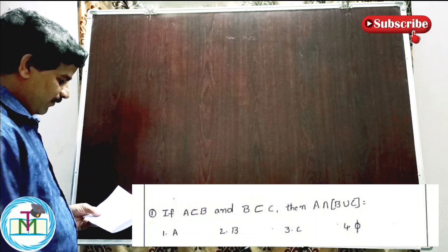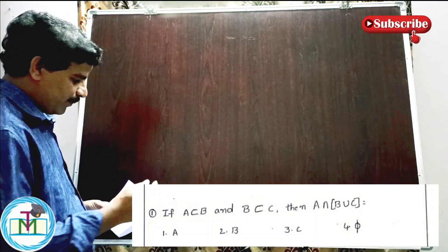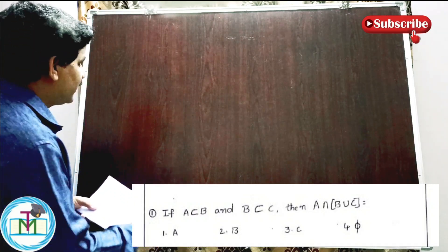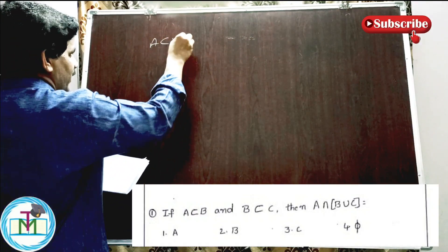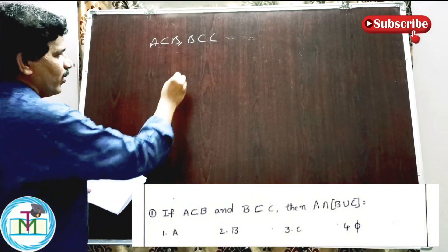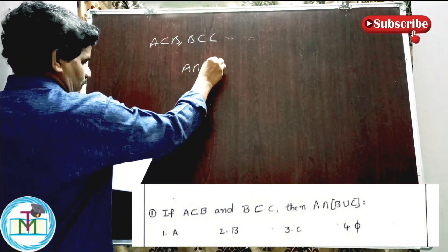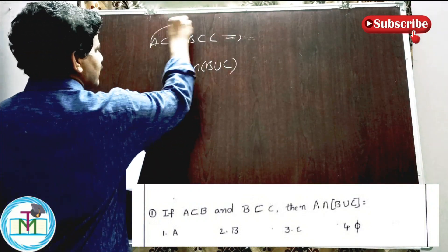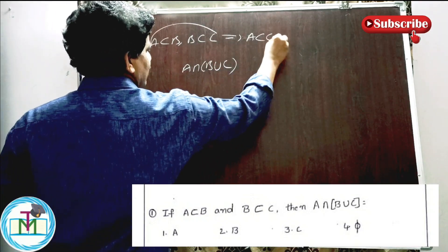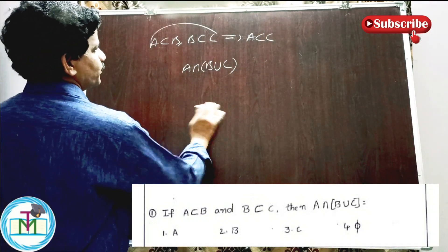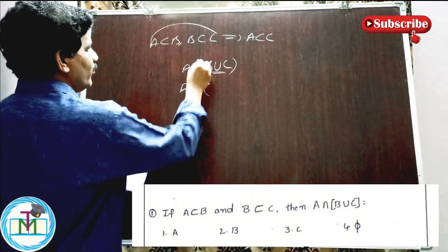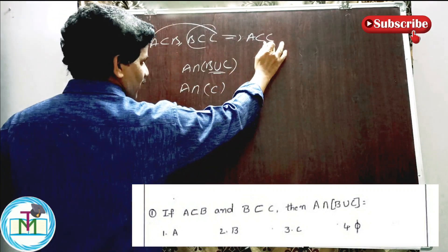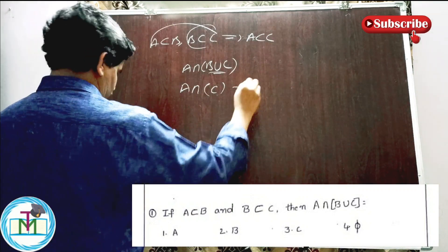Question number one: if A is a subset of B and B is a subset of C, then A intersection (B union C) is equal to how much? Here, what is given is A is subset of B and B is subset of C. I want A intersection (B union C). Since A is subset of B and B is subset of C, A is also a subset of C. So, A intersection (B union C) — what is A intersection C when A is a subset of C?